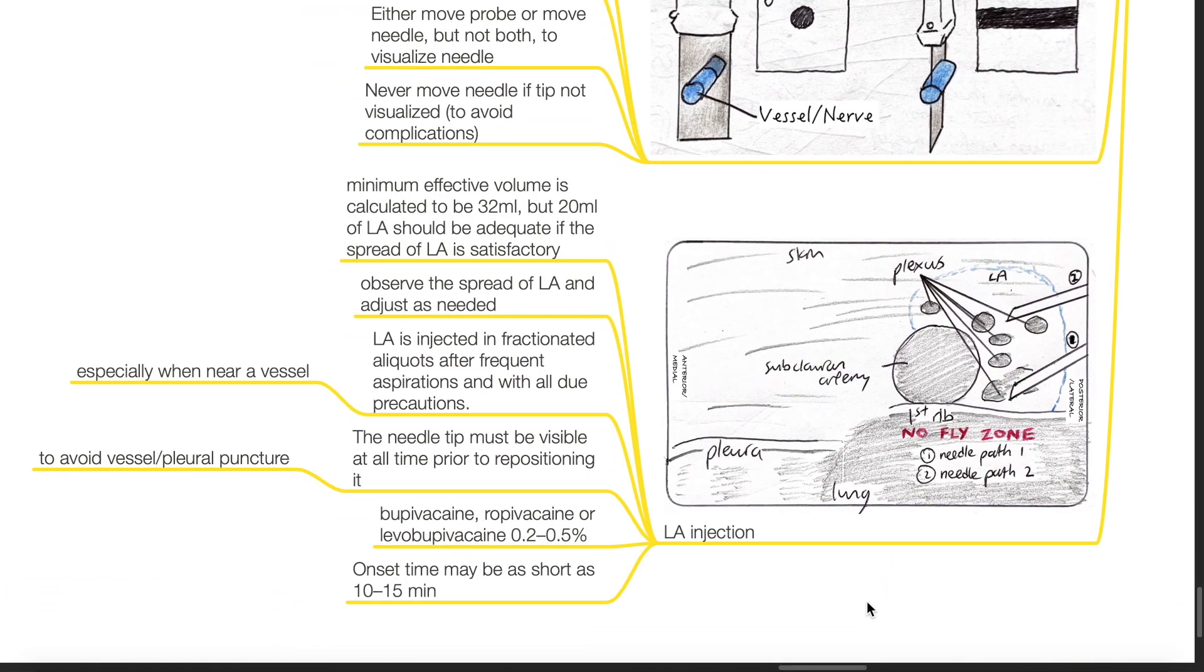Local anesthetic injection: the minimal effective volume is calculated to be 32 mL, but 20 mL of local anesthetic should be adequate if the spread is satisfactory. Observe the spread of local anesthetic and adjust as needed. Local anesthetic is injected in fractionated aliquots after frequent aspirations with all due precautions, especially when near a vessel. The needle tip must be visible at all times prior to repositioning it to avoid vessel or pleural puncture.